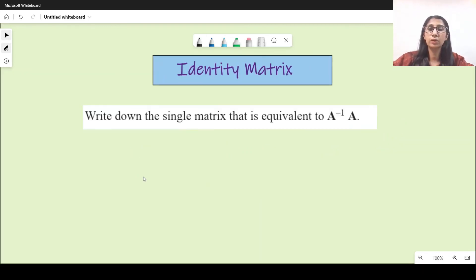Here's another one: write down the single matrix that is equivalent to A inverse A. So we know that is just equals to identity matrix, so the answer is 1 0 0 1.